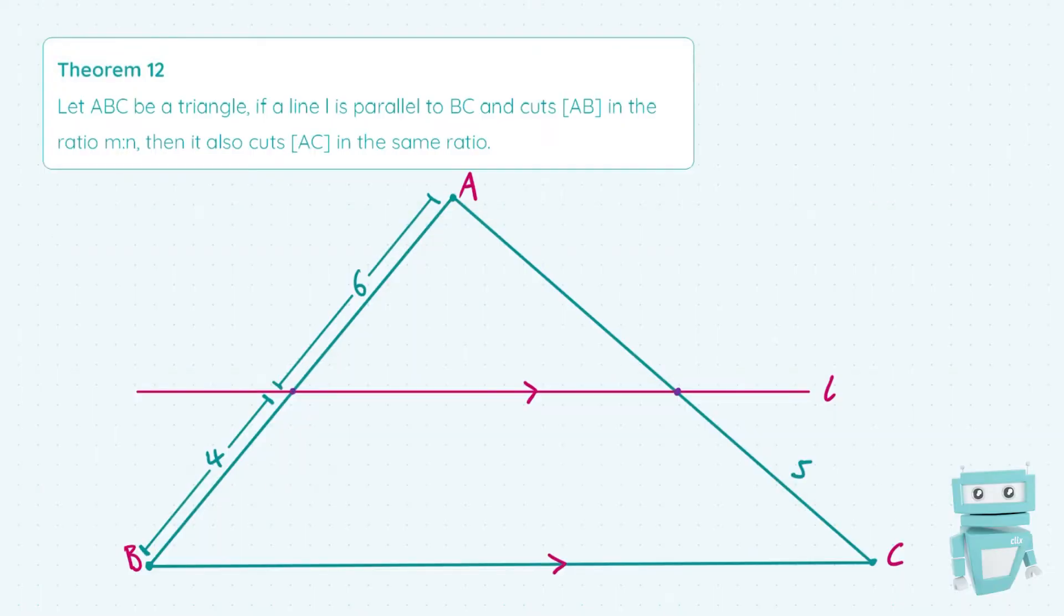Hi guys, Sean here from StudyClicks. In this video we're going to be taking a look at Theorem 12, which states that if we let ABC be a triangle, if a line L is parallel to BC and cuts AB in the ratio M is to N, it also cuts AC in the same ratio.